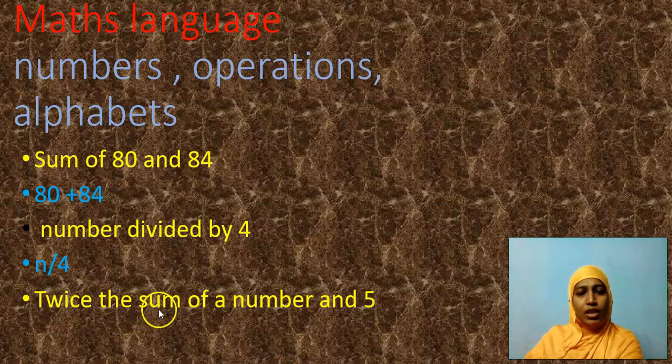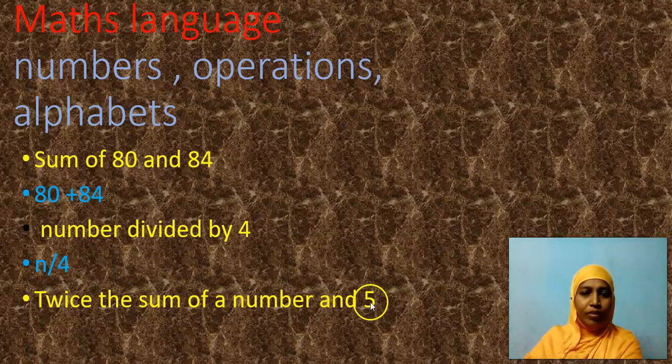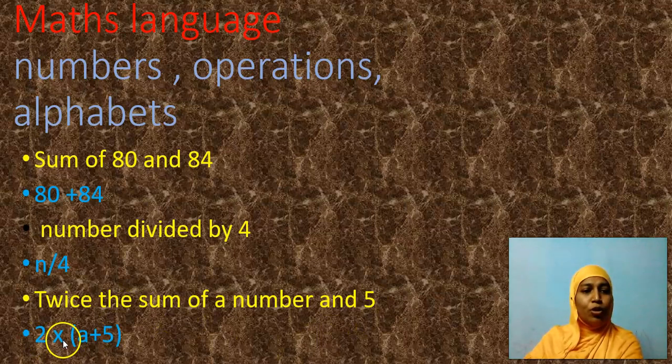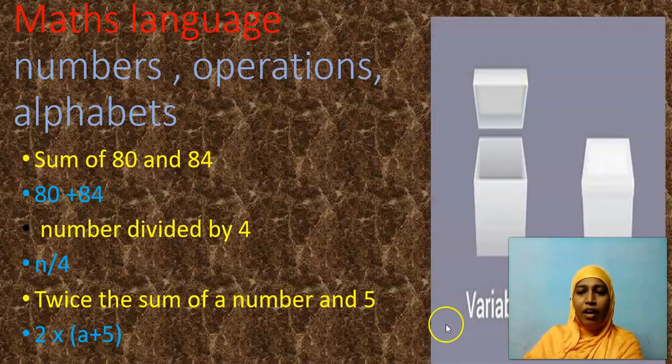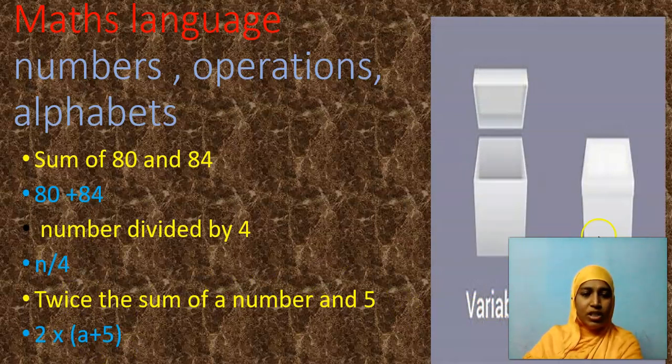So 2 into sum of, sum in the sense plus, a number. That number can be N or X or Y, and 5. So I can write mathematical expression as 2 into A plus 5. In all these mathematical expressions, what do we have? Yes children, we have variables and constants.